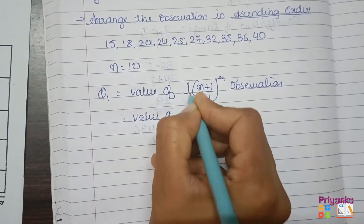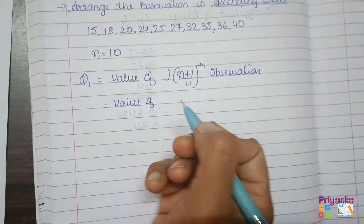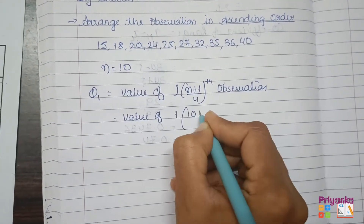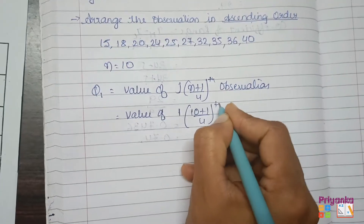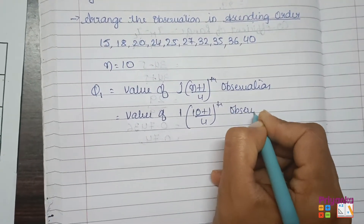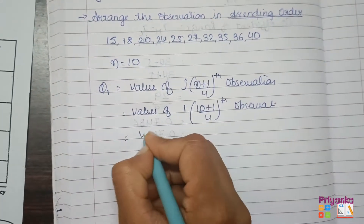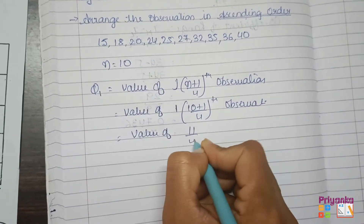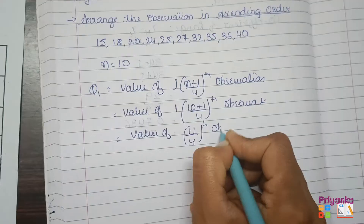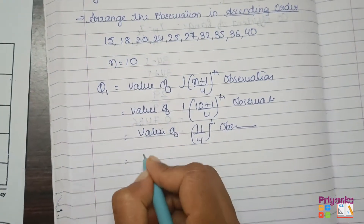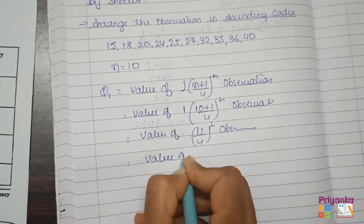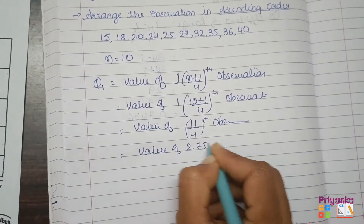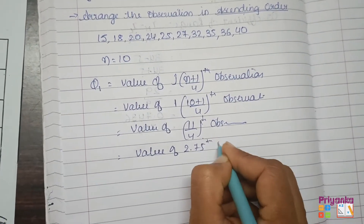Here J will be 1 for the first quartile, and N is 10, so we calculate (10+1)/4 = 11/4th observation. The value of 11 divided by 4 gives us the 2.75th observation.